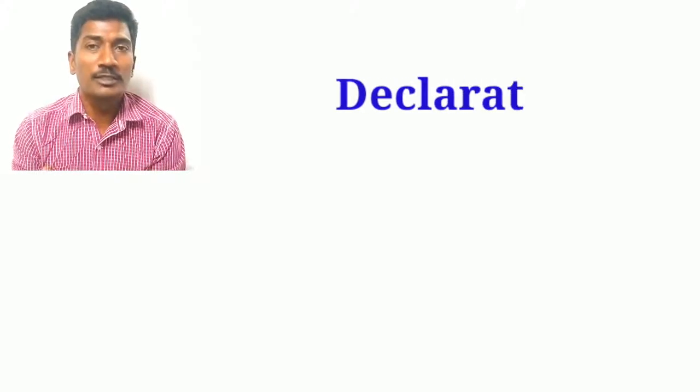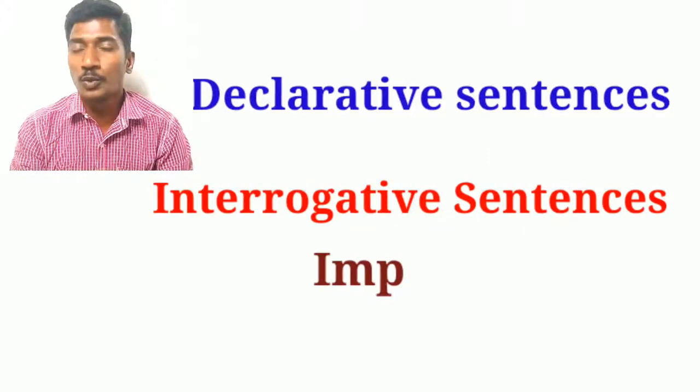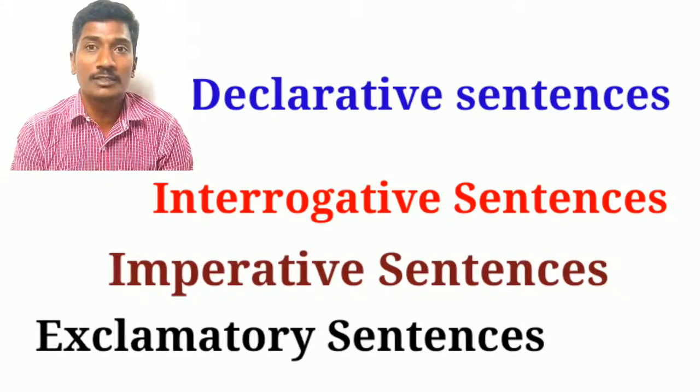Let me revise once again from the beginning. There are four different kinds of sentences in English: one is declarative sentences, second is interrogative sentences, third is imperative sentences, and fourth is exclamatory sentences. I hope you have all very clearly understood today's topic — the kinds of sentences. Those who have not watched the previous video on 'what is a sentence,' please go through my previous video. That will make it very clear.